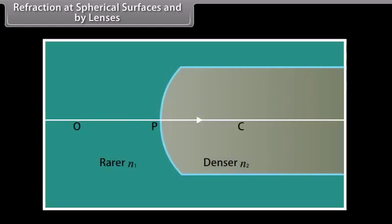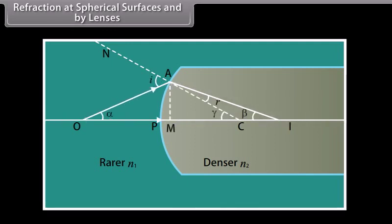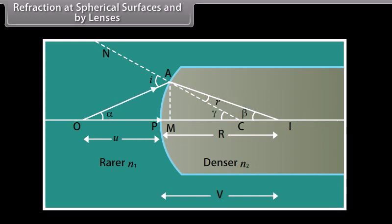Refraction at a spherical surface. The figure shown shows a convex refracting surface separating two media. Let P be the pole and C the center of curvature of the refracting surface. Let N1 and N2 be the refractive indices of the rarer and denser media respectively. Let O be a luminous point object on the principal axis of the convex refracting surface. An incident ray O-A after refraction at point A bends towards the normal N-A-C and goes along A-I. Another ray O-P falls normally on the surface and proceeds undeviated. The two refracted rays meet at I, which is the real image of point object O.